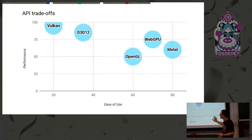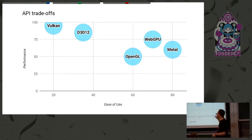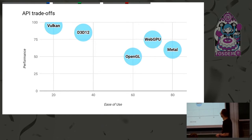This is a highly subjective scale that lets you reason about what WebGPU is. The most performant API is Vulkan — it's close to the hardware. OpenGL is sort of neither: it's easy but not performant. Metal is pretty good — it's both. And WebGPU is trying to get the best of both worlds.